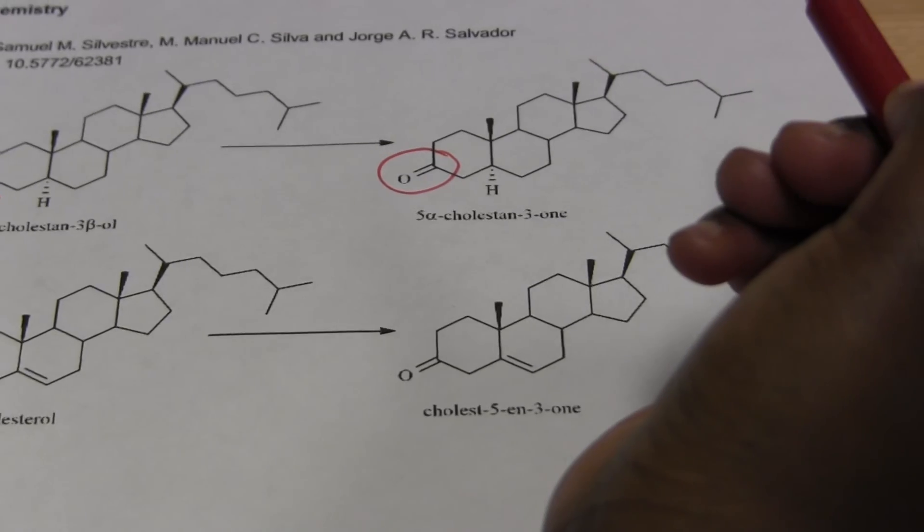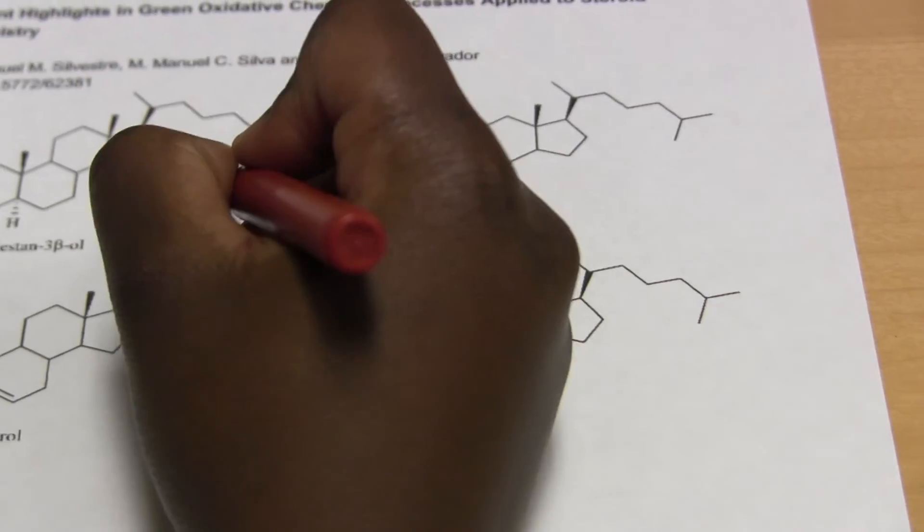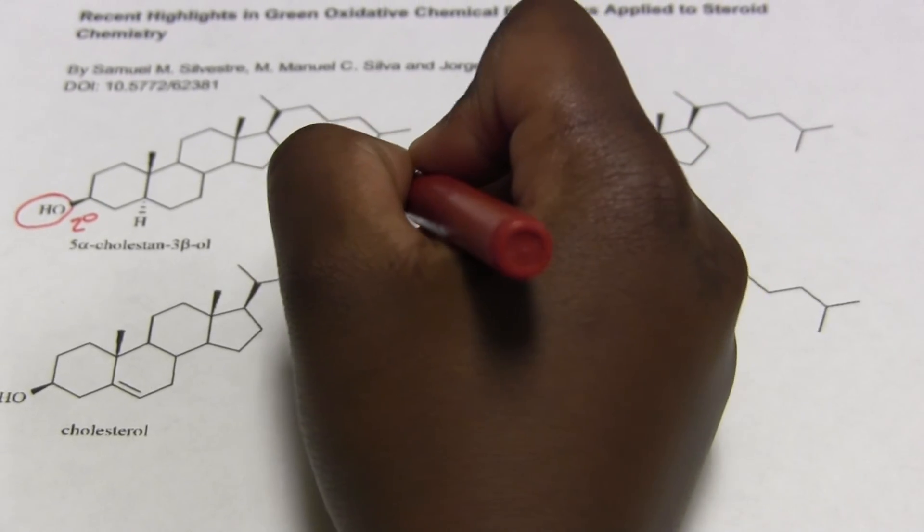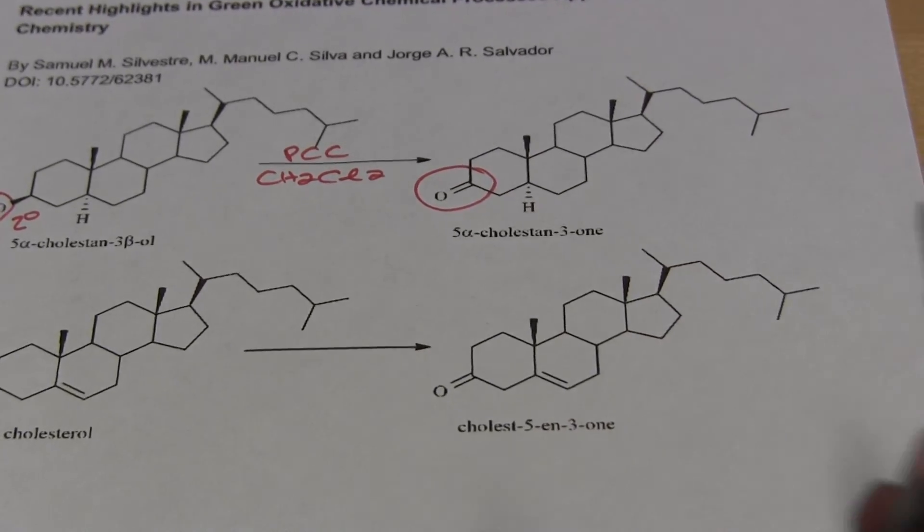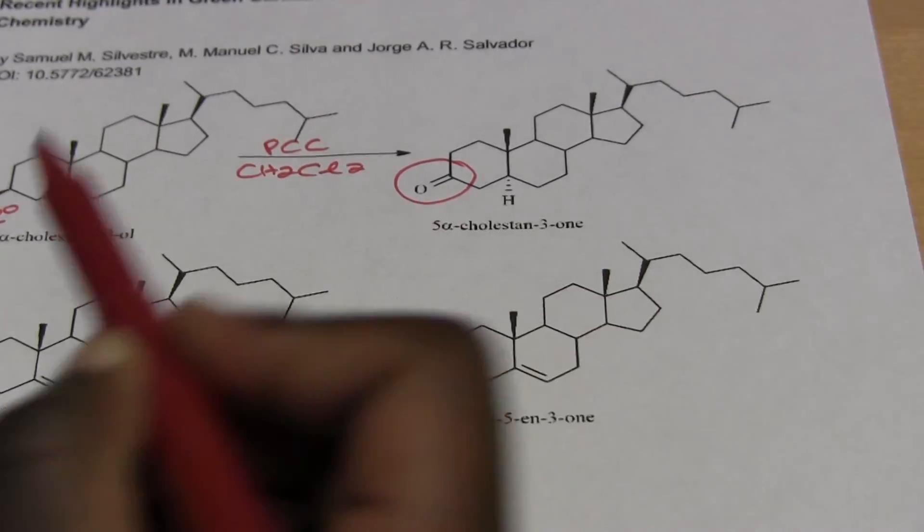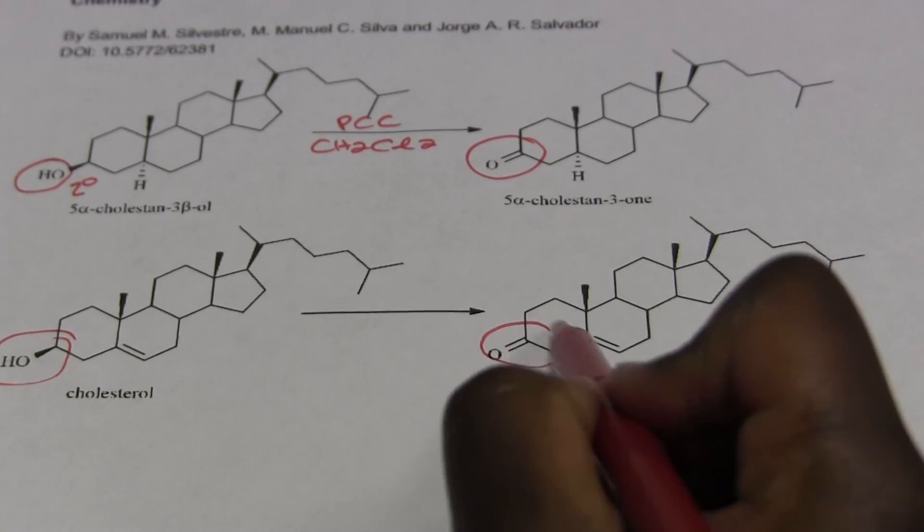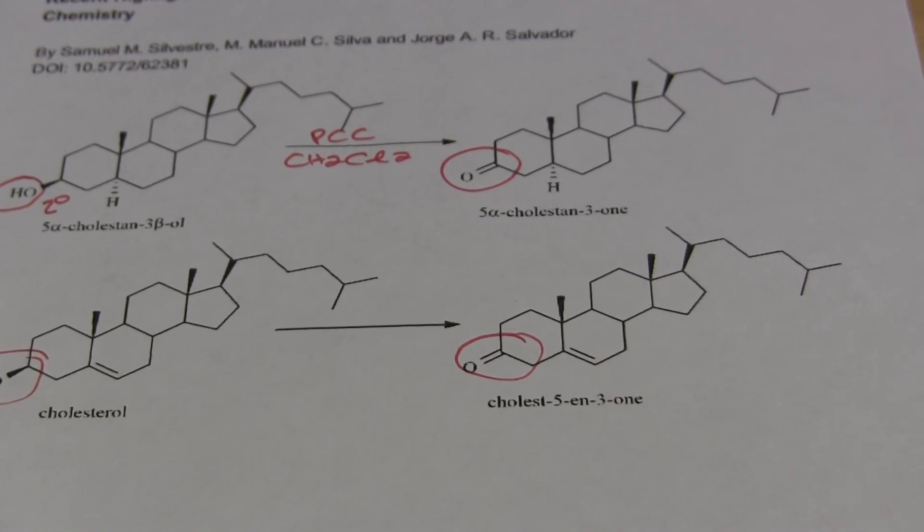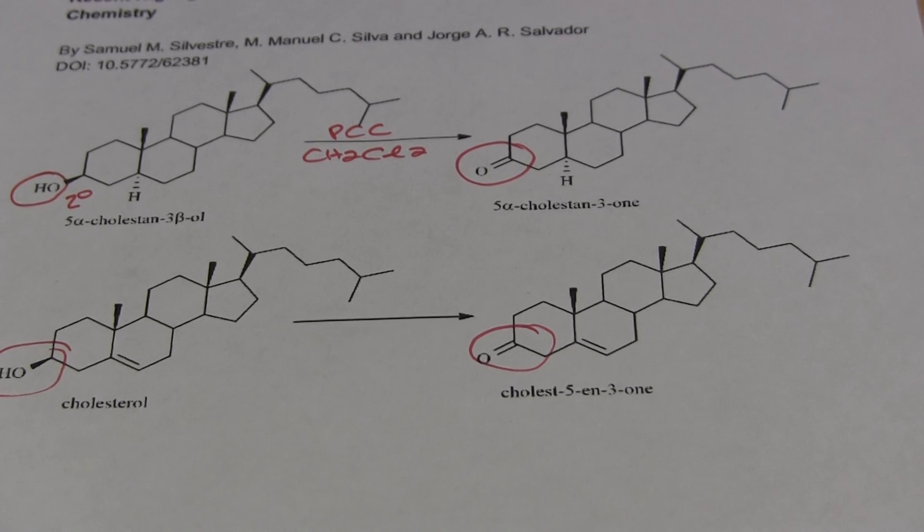So this oxidation can be PCC with CH2Cl2. And also this is another form of cholesterol and it goes the same way. This is the second degree alcohol and it gets oxidized into a ketone. And to do the synthesis you can also use PCC with CH2Cl2. Thank you for watching.